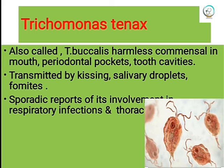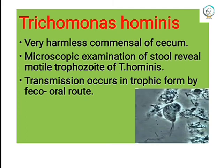Trichomonas tenax, also called Trichomonas buccalis, is a harmless organism commonly found in the mouth, particularly in dental plaque and dental pockets. It is transmitted by kissing, salivary droplets, or fomites. There are sporadic reports of its involvement in respiratory infections and thoracic abscesses.